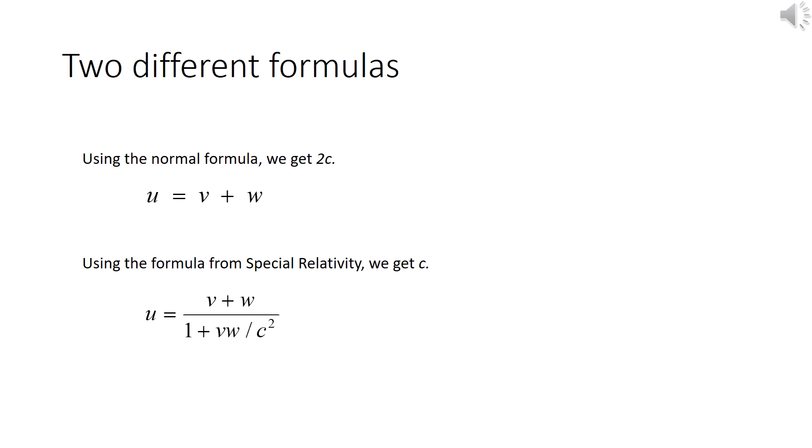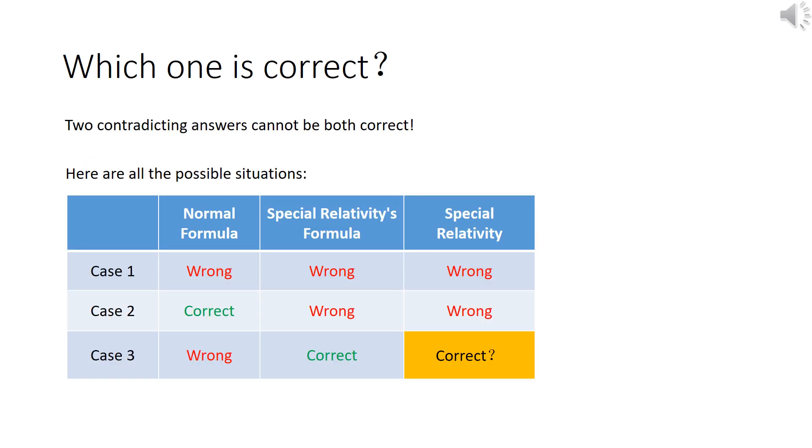But which one is correct? Two contradicting answers cannot both be correct. Let's list the three possible combinations in the following table. We can skip the first two cases where special relativity's formula is assumed to be wrong, because they do not add any value to our discussion.